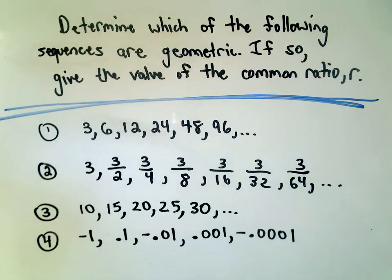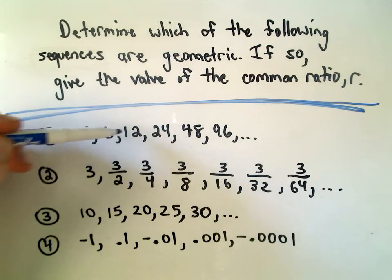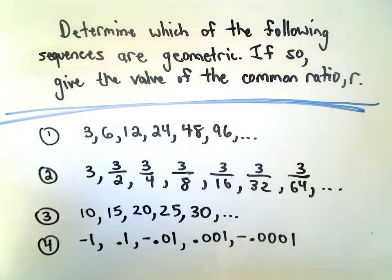All I want to do in this video is we've got a couple of sequences here. We want to determine which, if any, are geometric, and if so, give the value of that common ratio R. Let's look at my first listing of numbers: 3, 6, 12, 24, 48, 96.